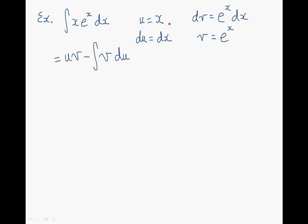A trick for remembering this formula is the following. We begin by thinking about a diagonal arrow: here we have u times v, and now the following arrow going to the left gives us v du. So the first arrow gives u times v, which is what we have here, minus — and the second arrow gives us v du, which is what we have here.